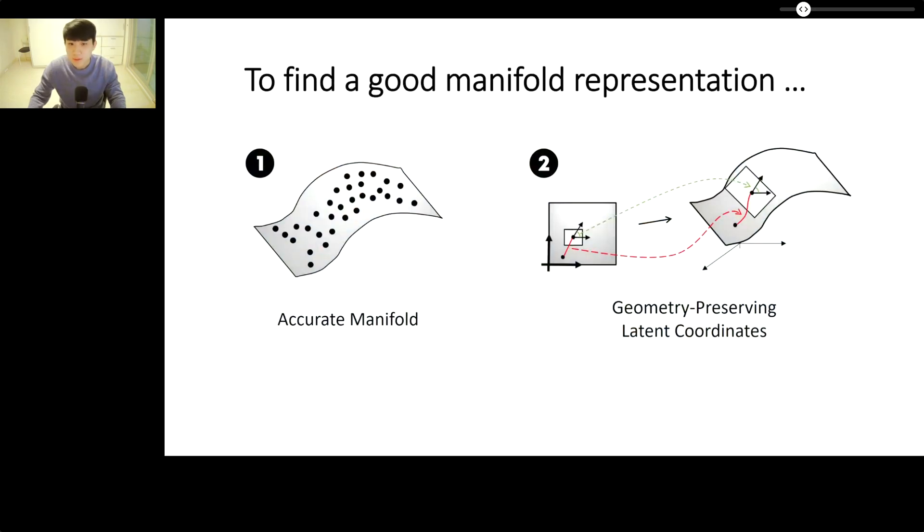In this paper, we argue that a good representation should also preserve the geometry of the data manifold. That is, nearby points on the manifold should have representations that are also nearby, and angles and volumes should be preserved as much as possible.